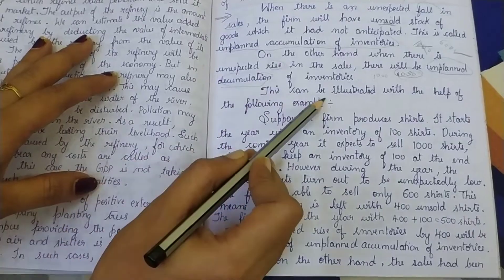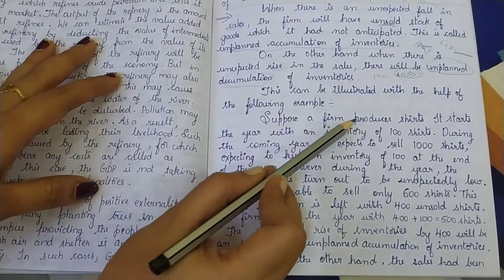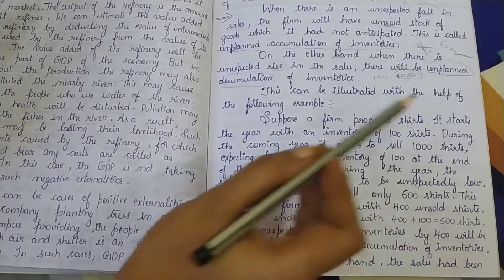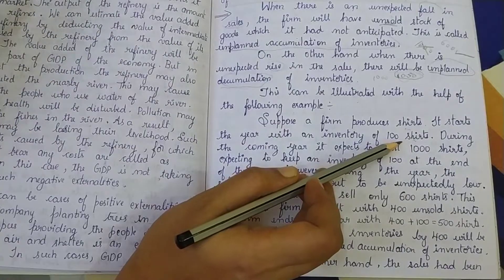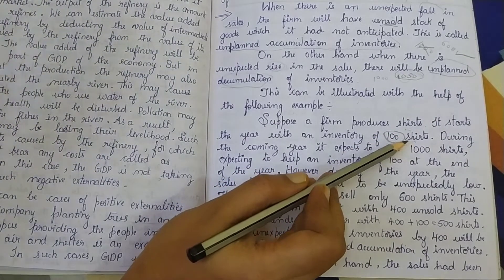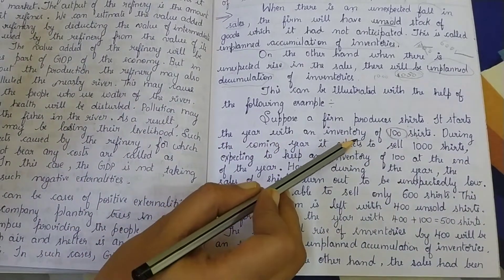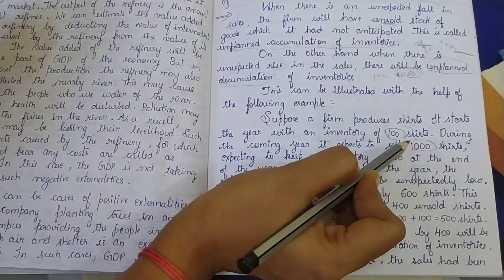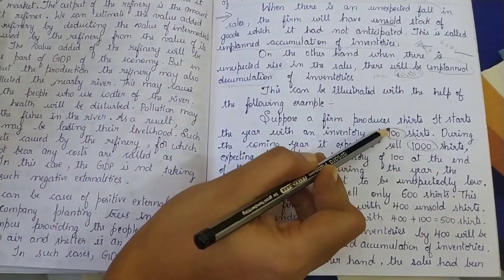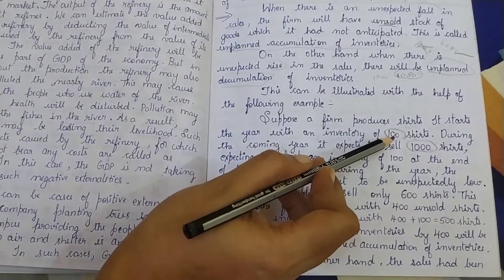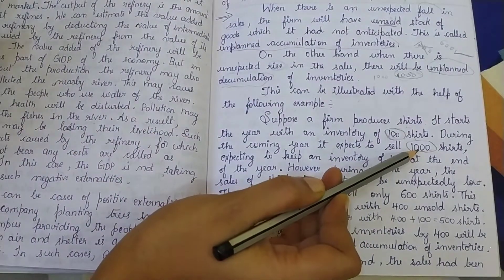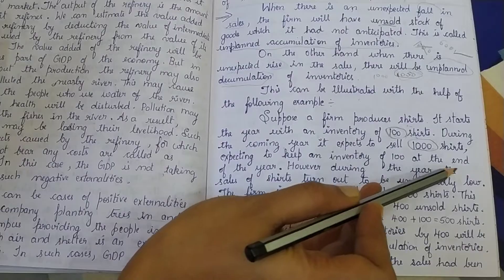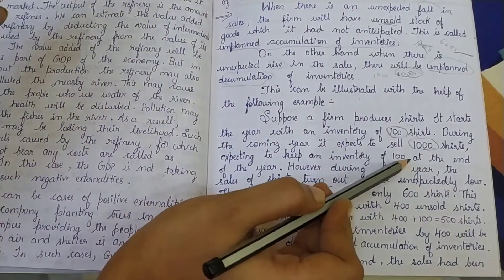Now we shall read the example. Suppose a firm produces shirts. It starts the year with an inventory of one hundred shirts — this is the opening inventory. During the coming year, it expects to sell one thousand shirts, and so it manufactures an additional one thousand shirts. The opening stock of one hundred shirts remains as is, and the firm expects to keep an inventory of one hundred shirts at the end of the year as well.